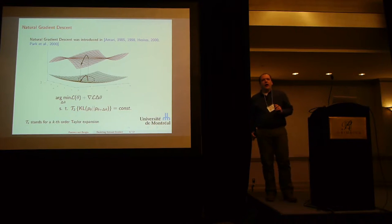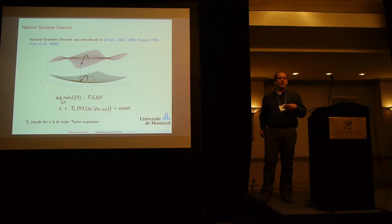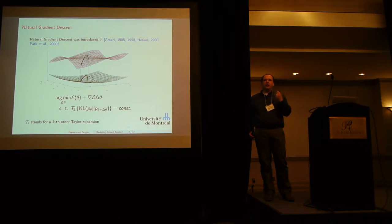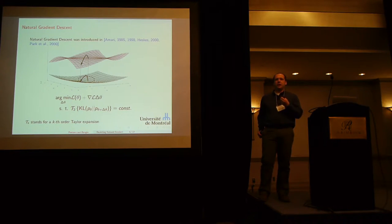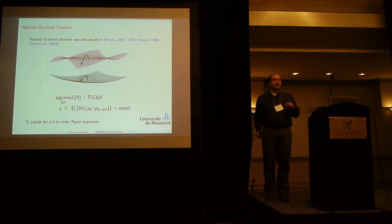What does that mean? For every parameter value theta of your model, you get a different function. Certain large changes in theta can induce a very small change in your functional behavior. In the extreme case, you could change a parameter value and your function doesn't change at all. On the other hand, very small changes in your parameter can result in a very different function — just think of a recurrent net where you make the weights larger and you get the exploding gradient.